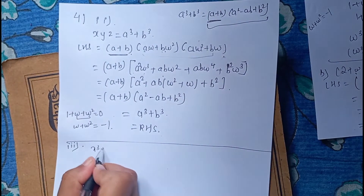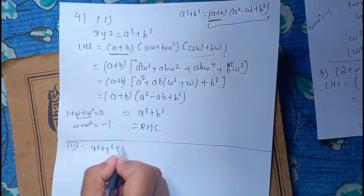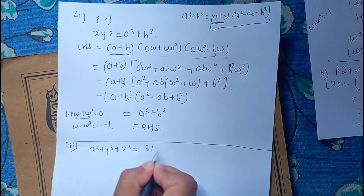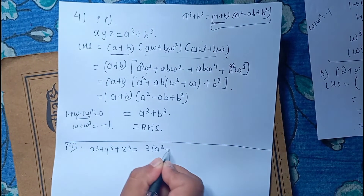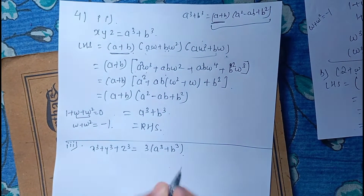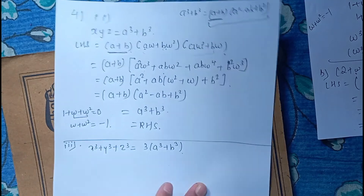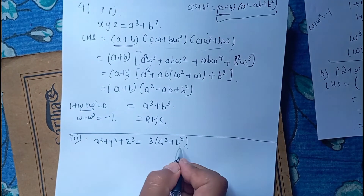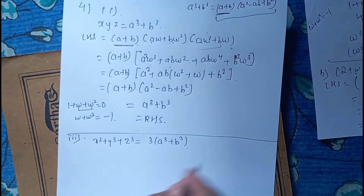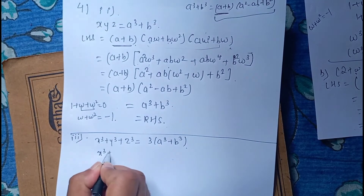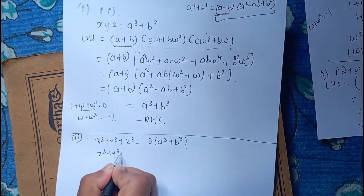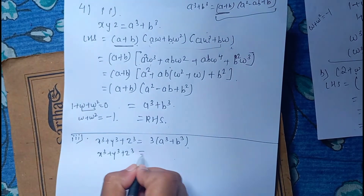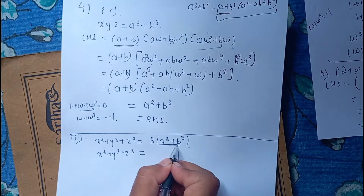Therefore, x cubed plus y cubed plus z cubed is equal to 3 times a cubed plus b cubed. We can also see that x cubed plus y cubed plus z cubed is equal to a cubed plus b cubed in this context.